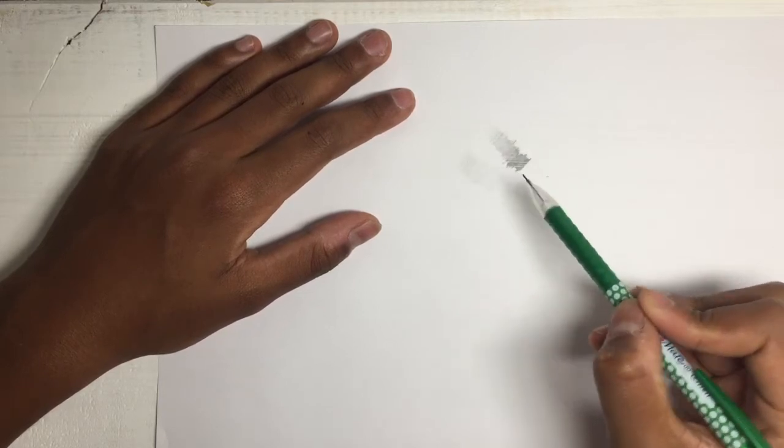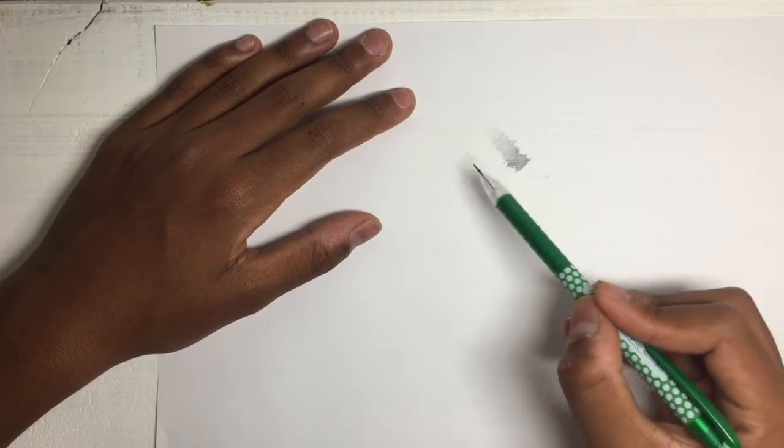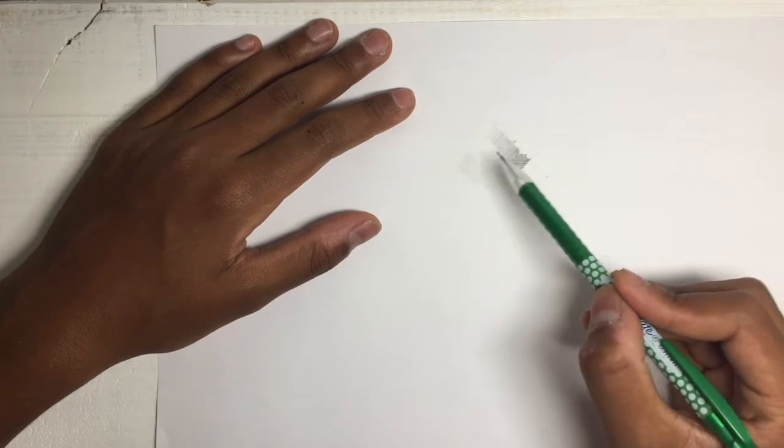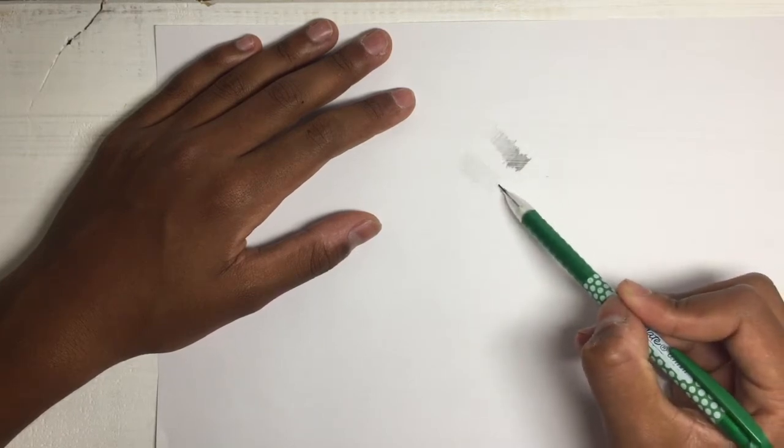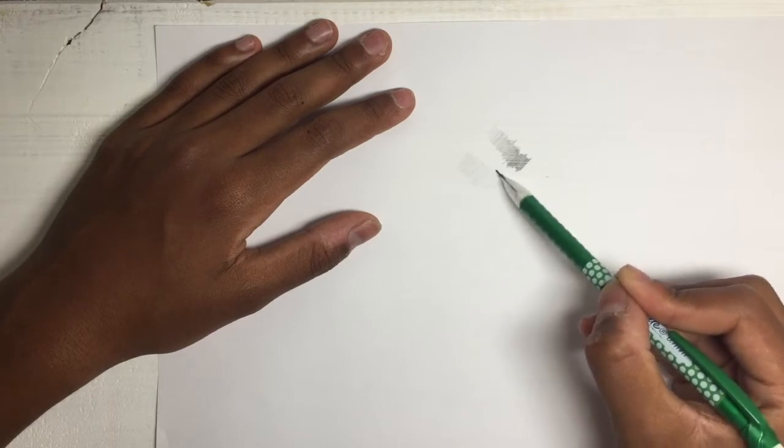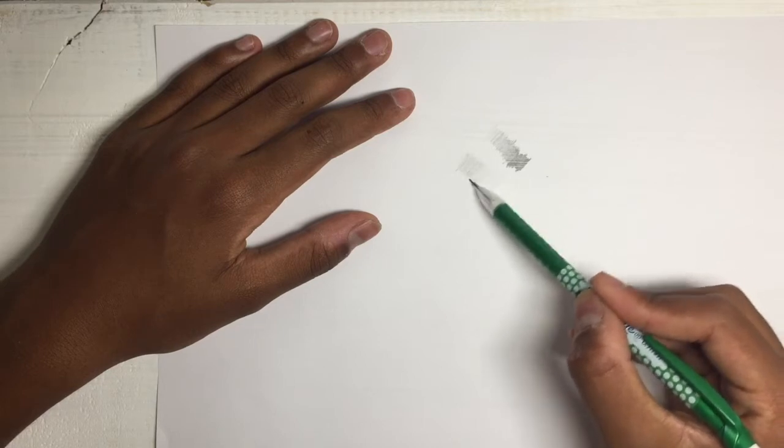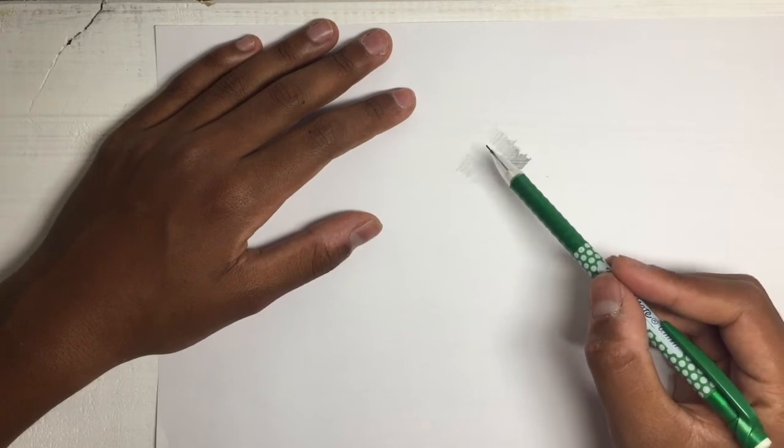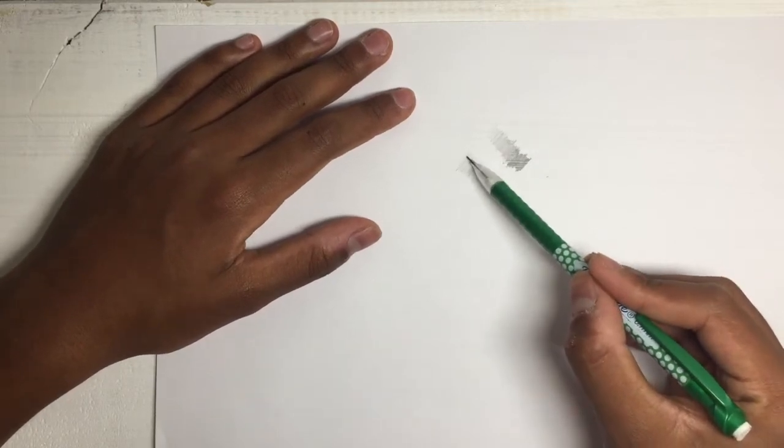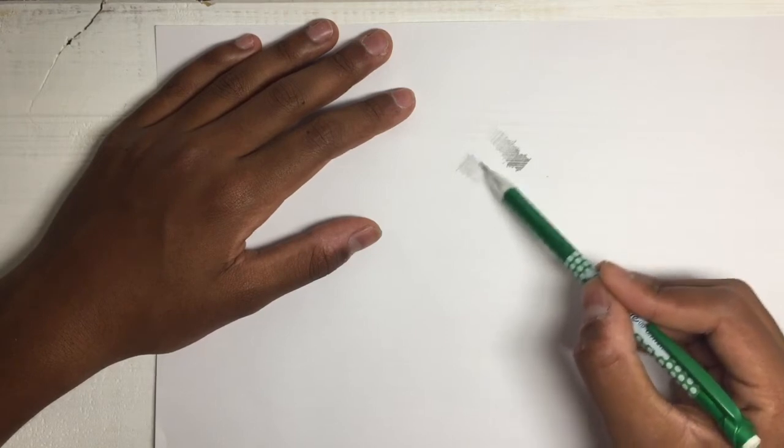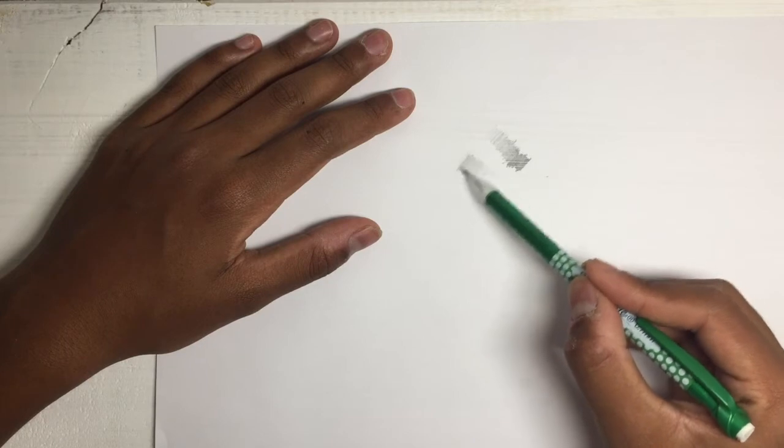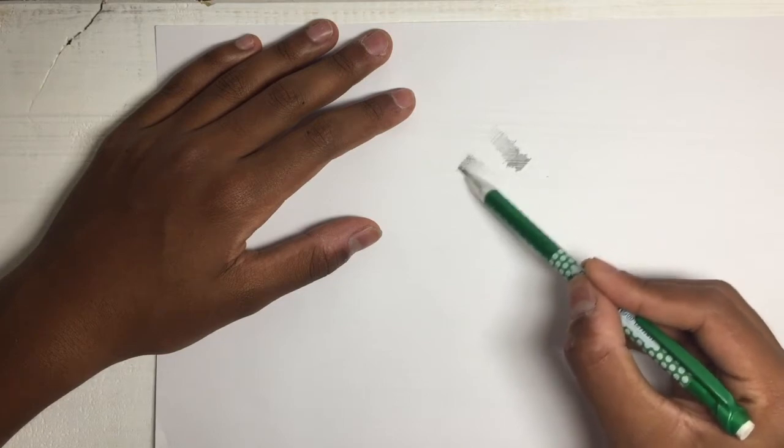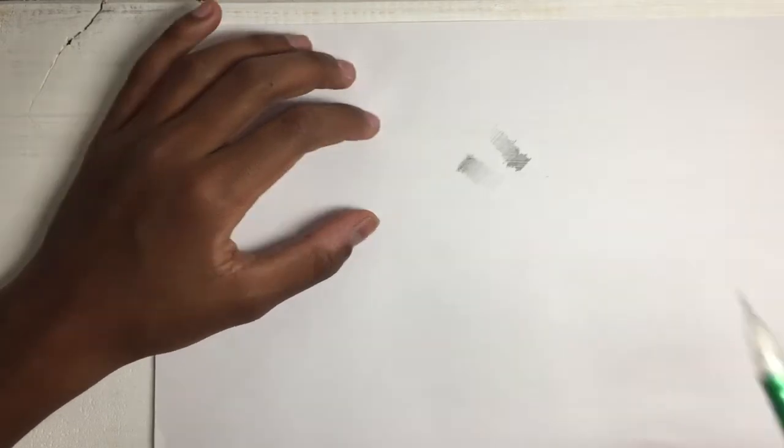After this we want to continue to add more layers to build up darker values in certain areas. For this piece we want the darkest value to be up here. To do this we're going to add a layer above this but instead of going all the way down we're going to stop short right about there. Keep in mind that I'm not using any more pressure than I have on the first pass. I'm simply layering so that it gets darker automatically. Now we can keep doing this and add as many layers as we want until we've achieved the required value.